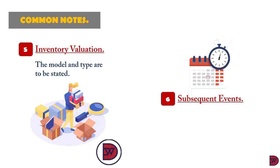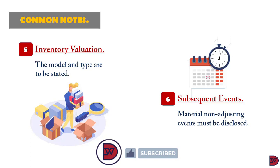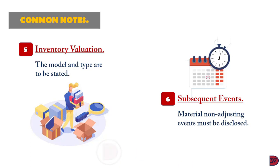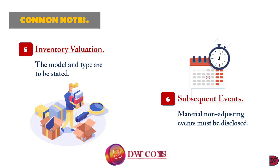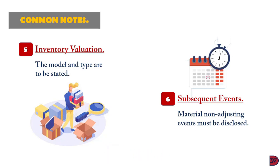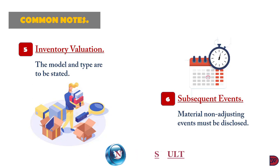The next is subsequent events. These are transactions that occur after the balance sheet date but before the approval of the financial statements. There are two types: adjusting events, which must be adjusted before the financial statements are approved for distribution, and non-adjusting events, which are to be captured in the notes or disclosed if they are material.